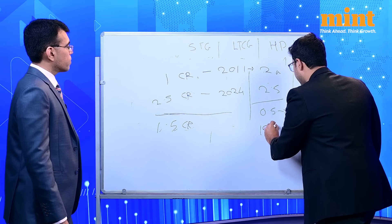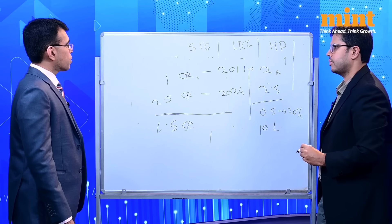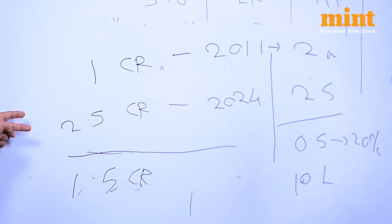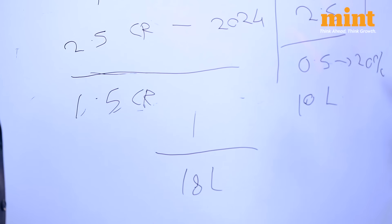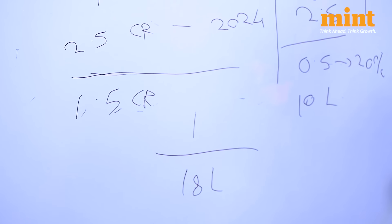Now without indexation where do we stand? So without indexation the gain is 1.5 crores. On that it's a flat tax of 12.5%. And this works to around 18.7 lakhs. So the tax has almost tripled in this example. It has doubled almost doubled in this example.